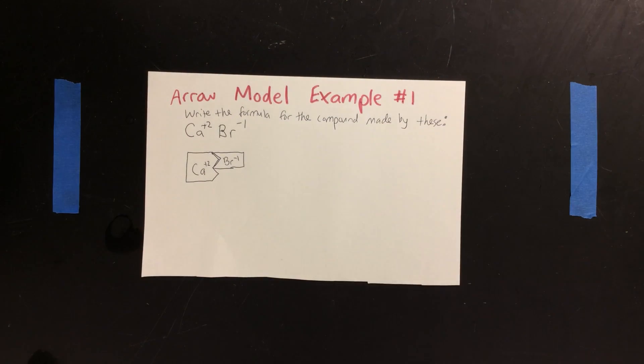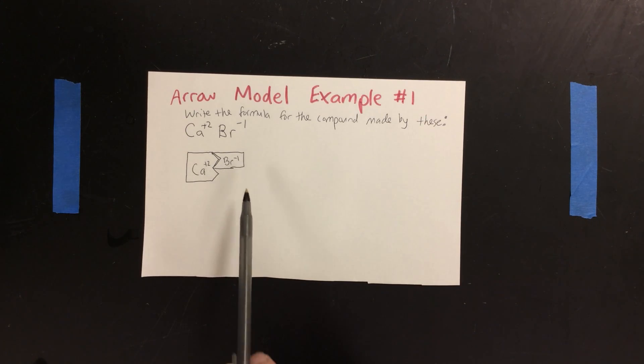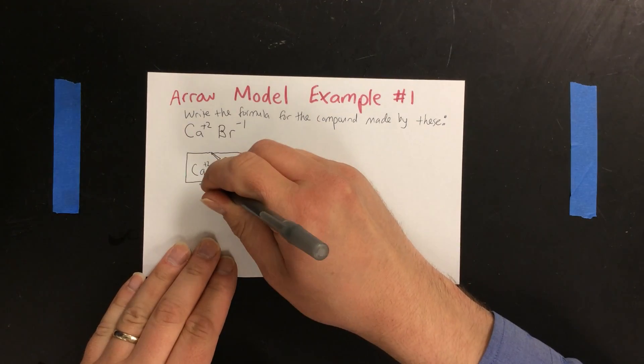Because the atoms have to give the same amount of electrons as the ones that take them, we have to end up with something that makes a perfect rectangle. Clearly this isn't correct. What we need is another bromine atom to complete our rectangle.